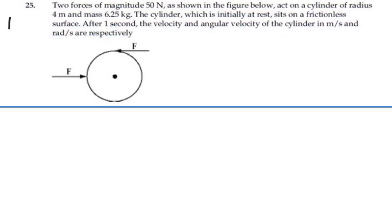Here's problem 1025. Two forces of magnitude 50 N as shown in the figure below act on a cylinder of radius 4 meters and mass 6.25 kg. The cylinder, which is initially at rest, sits on a frictionless surface. After one second, the velocity and angular velocity of the cylinder in meters per second and radians per second respectively are: